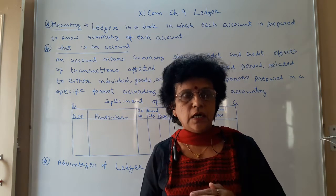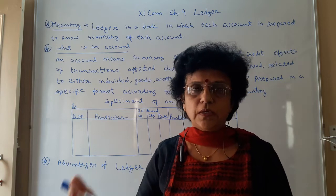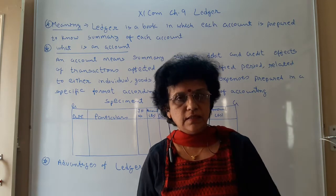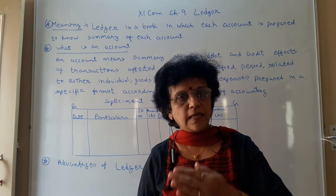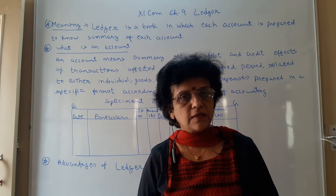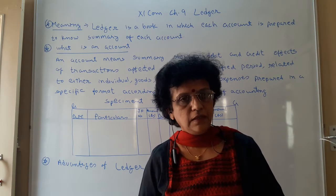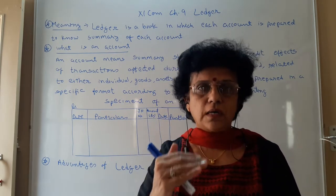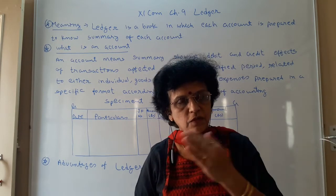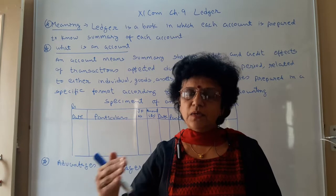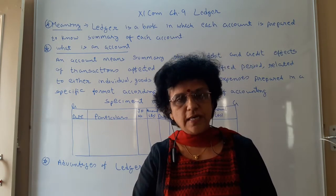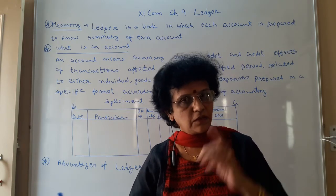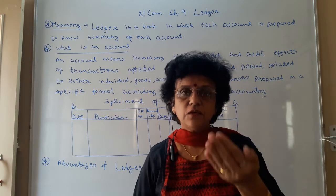For example, when you sold goods for cash, your journal entry becomes cash to sales. So cash is one account, sales is another account. When the owner brings capital into the business, you record cash account to capital account — so capital account is a new account. When you purchase goods for cash, your entry is purchase account debit to cash account, so purchase is a new account.